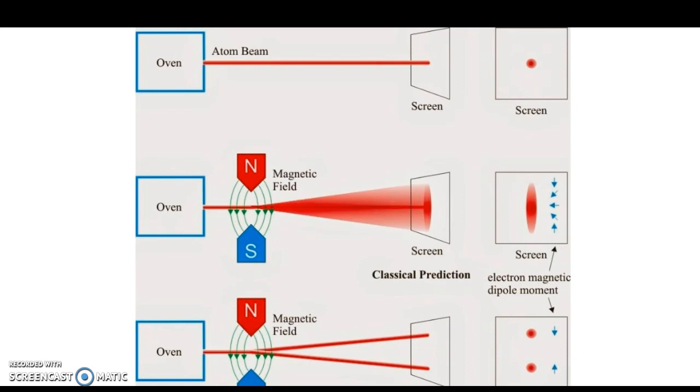The second surprising thing was how much the path of the electrons was deflected. If electrons were really bar magnets, they could be oriented in any direction. The component oriented along the magnetic field gradient, say the z-direction, would determine the force on the electron, and hence, how much it would be deflected.